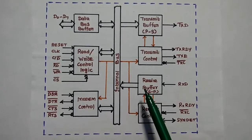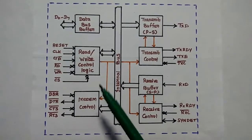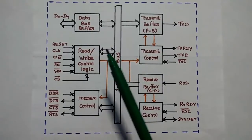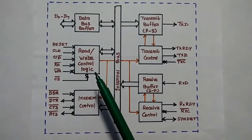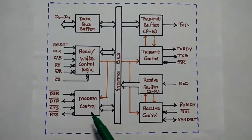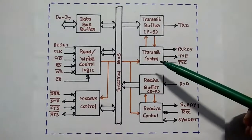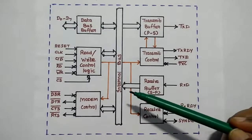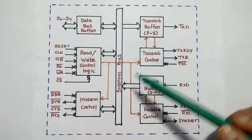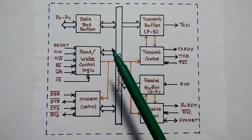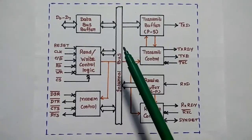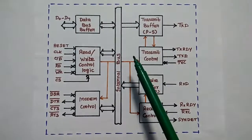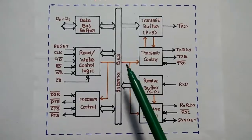This is the architecture of 8251A. It has important functional units: data bus buffer, read/write control logic unit, modem control unit, transmit buffer, transmit control, receive buffer, receive control, and internal bus. The data bus buffer is used to transfer 8-bit data between the system bus and the internal bus of the 8251A.